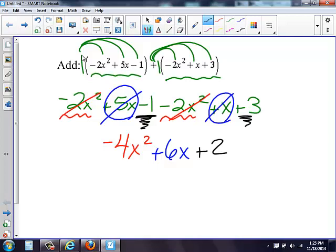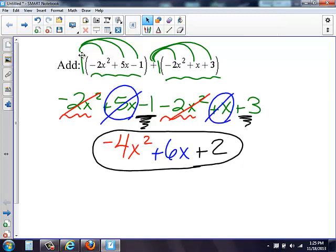I have it in descending order. All my terms are done, we've completed them. Here is my final polynomial simplified: negative four x squared plus six x plus two.